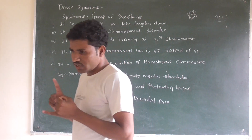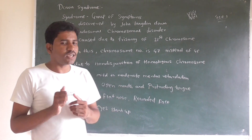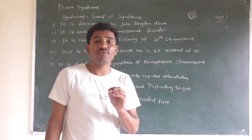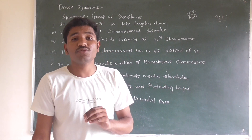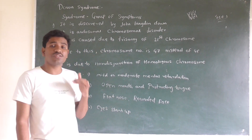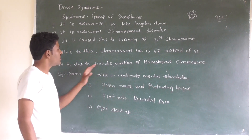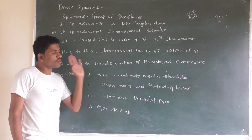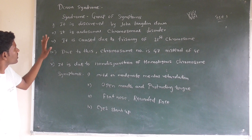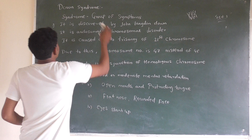Down syndrome is an autosomal genetic disorder — a problem with the autosomes. It involves trisomy: an extra chromosome is added to chromosome 21, making the total chromosome number 47 instead of 46. The main cause is non-disjunction of the homologous chromosome.